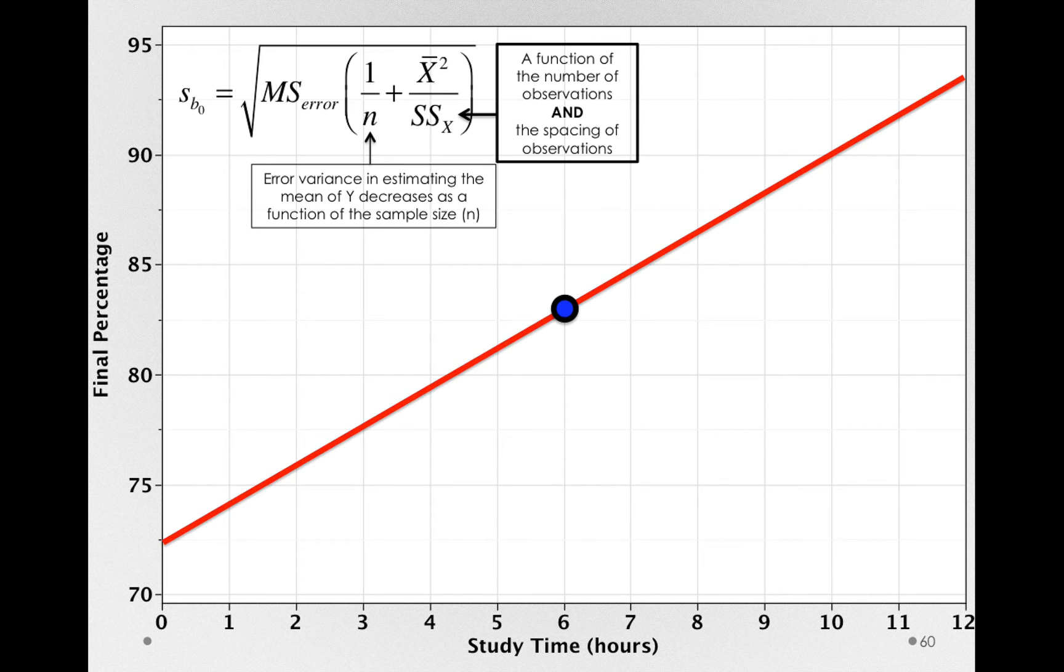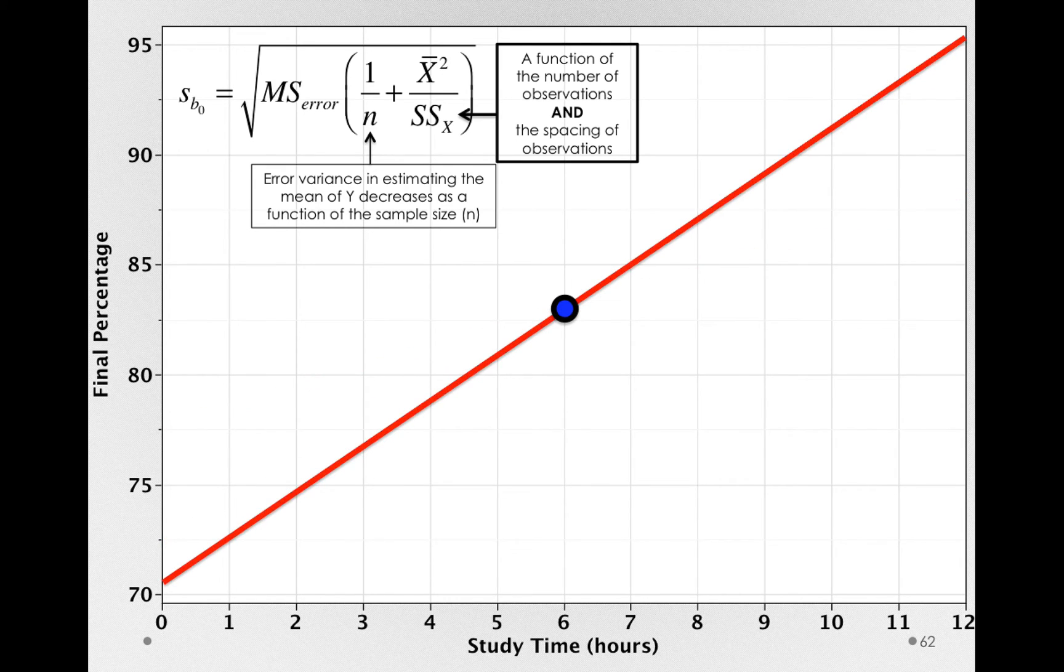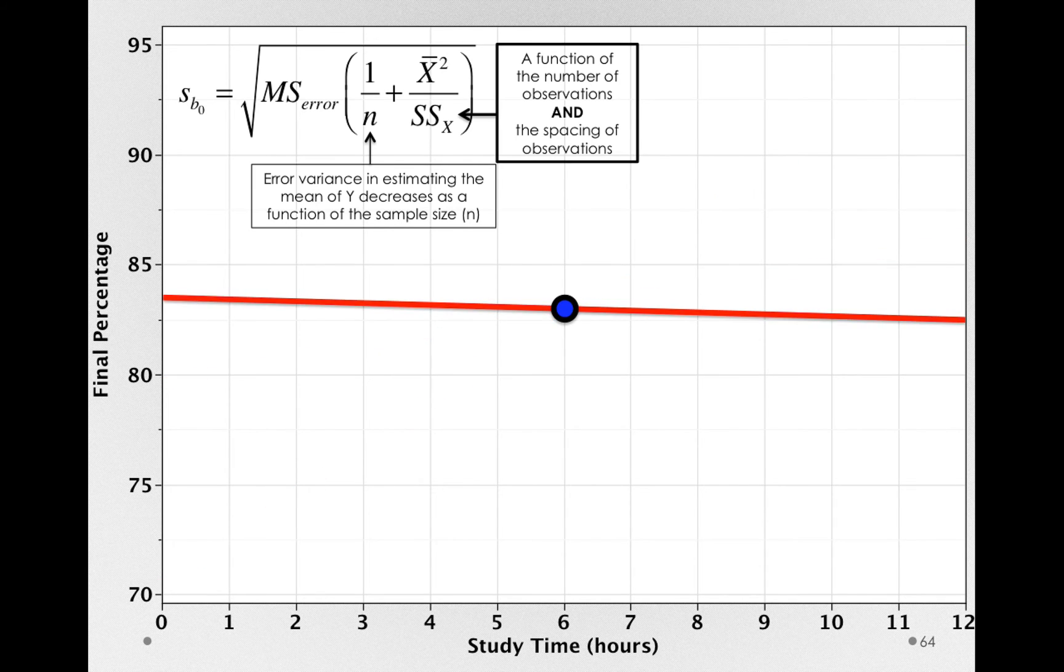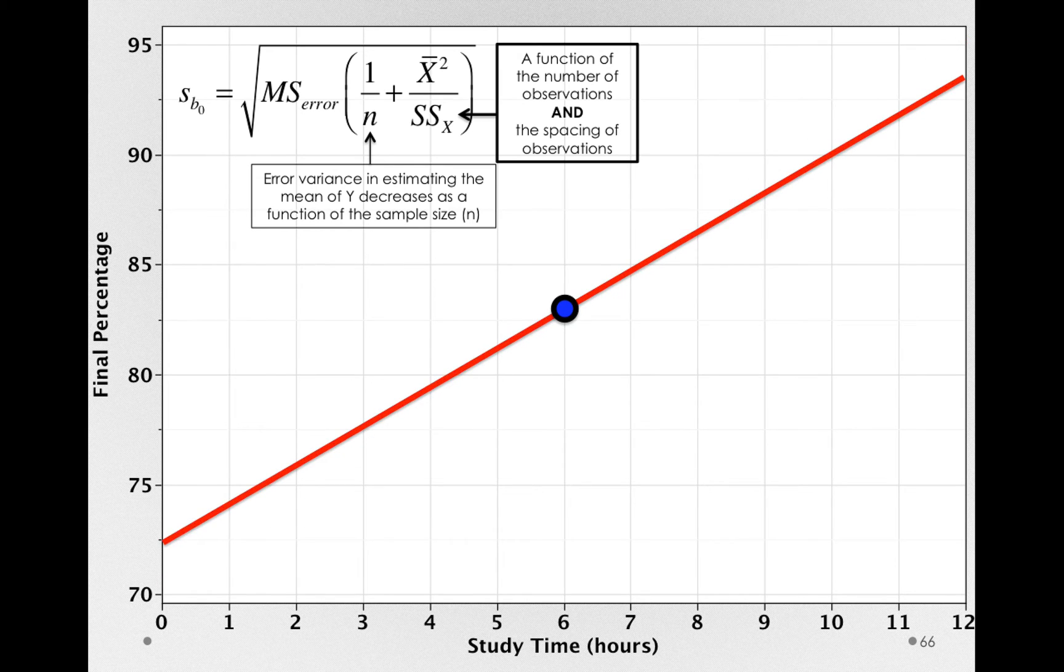Because, notice, if I misestimate the slope, where this line hits the y-axis, that is, where this line is when x is 0, will change. So, to the degree that I can estimate the slope well, that is also adding to the degree I can estimate the intercept well.